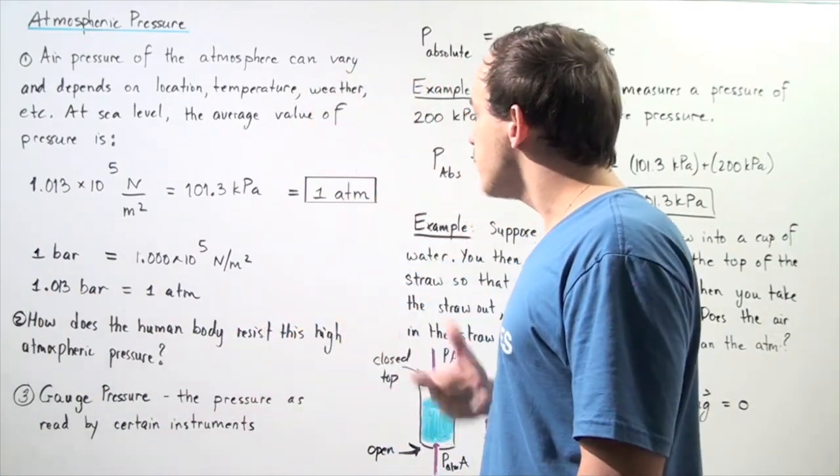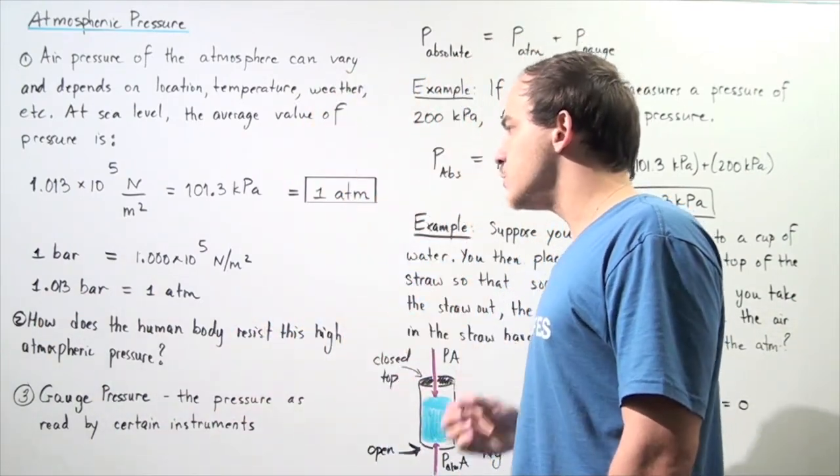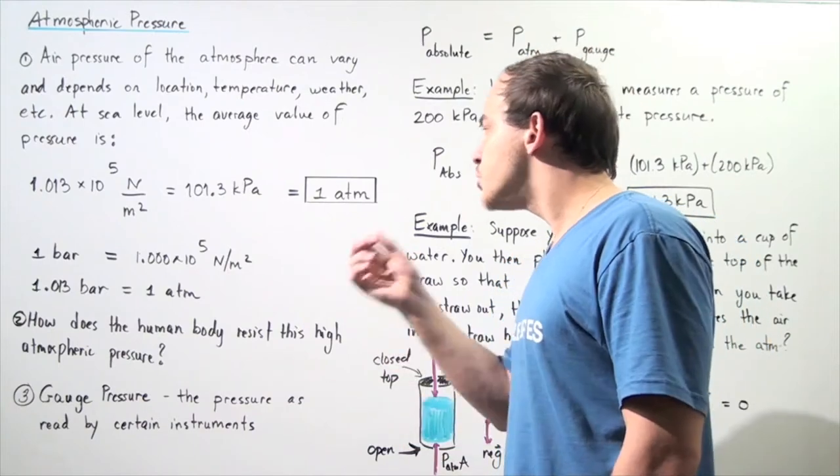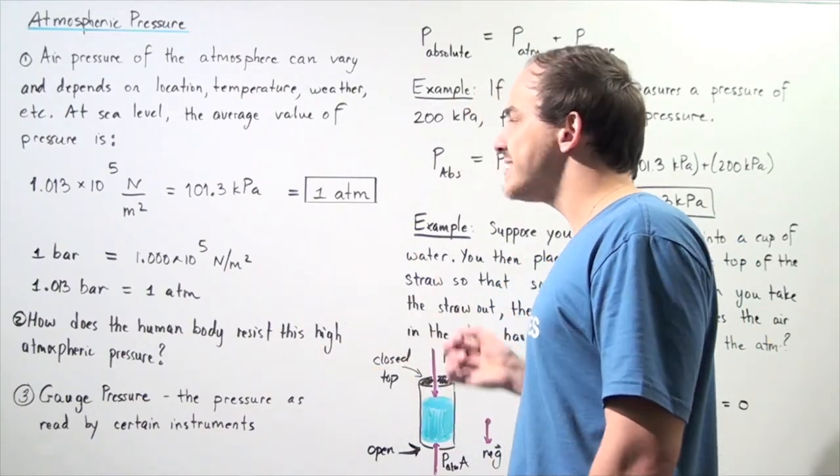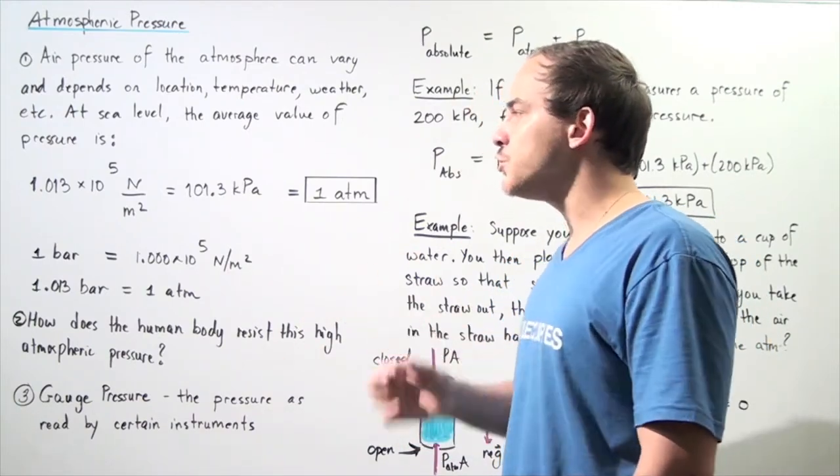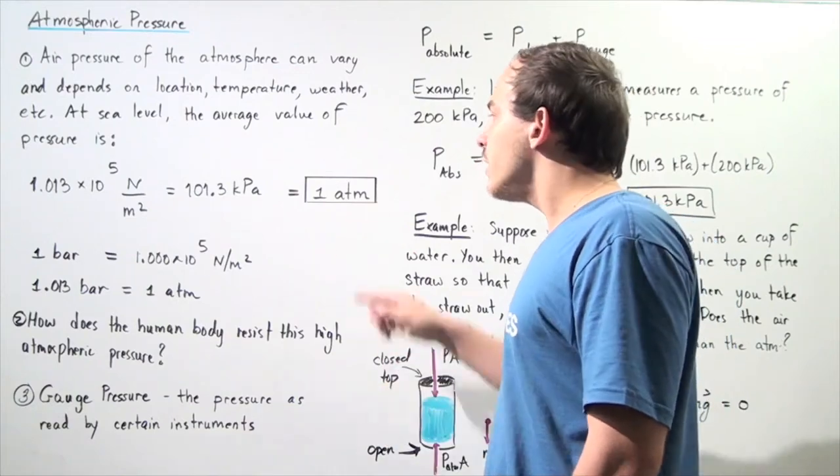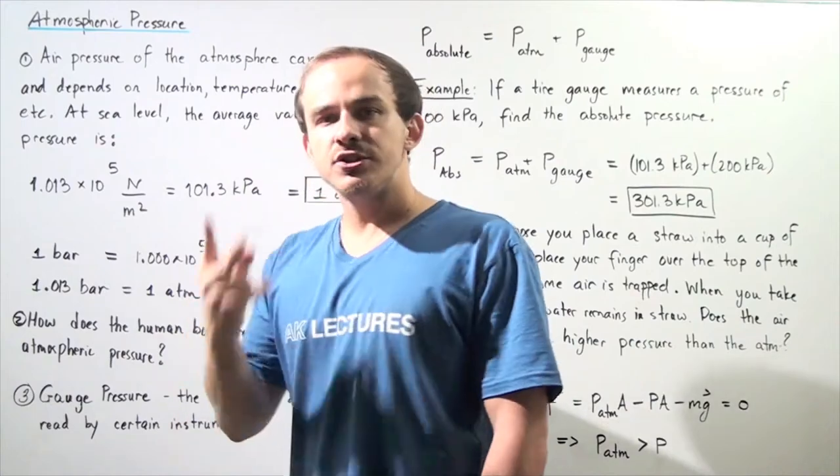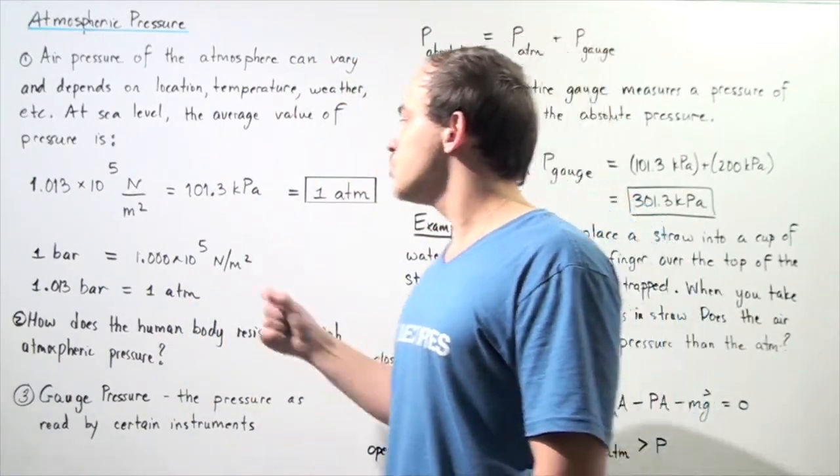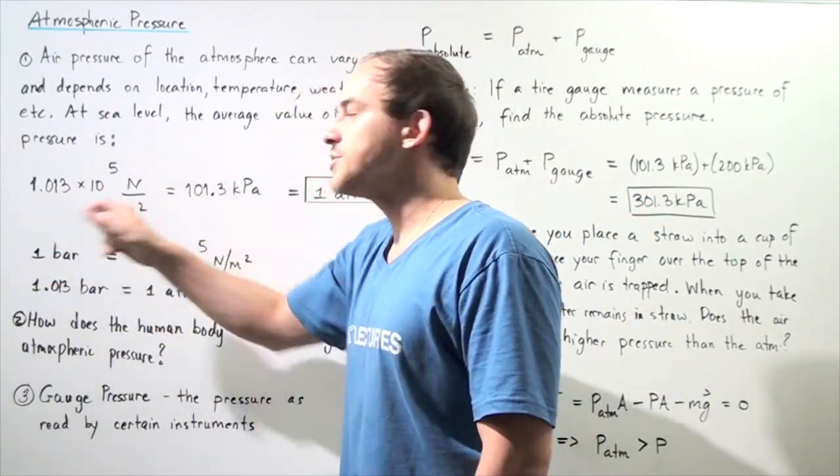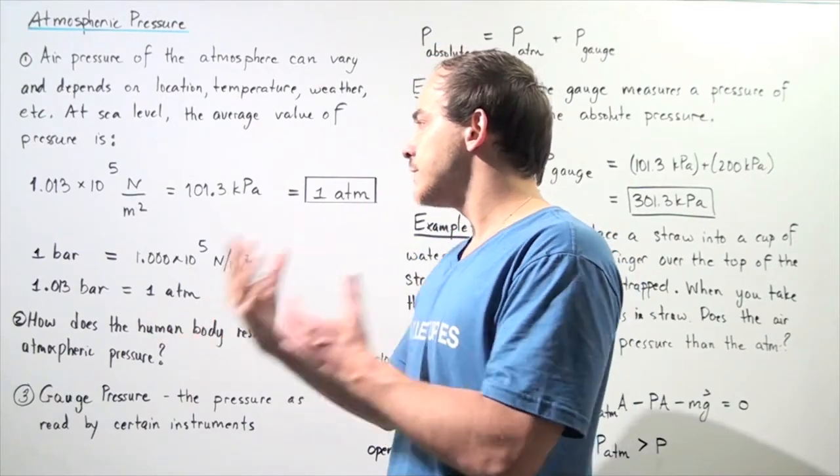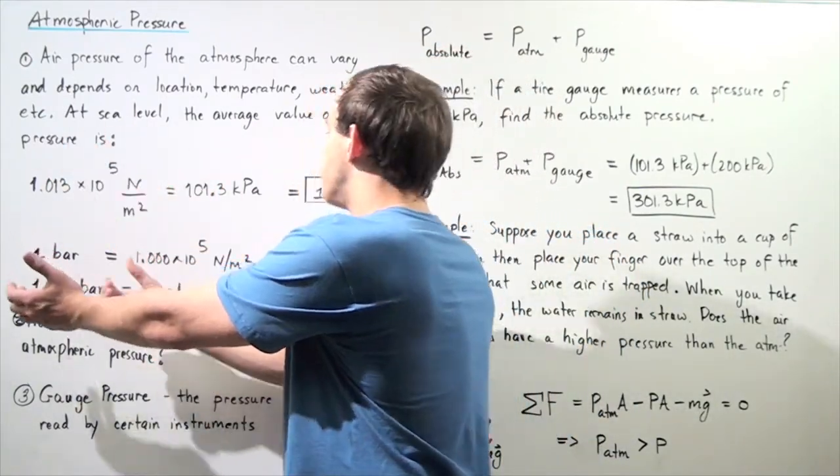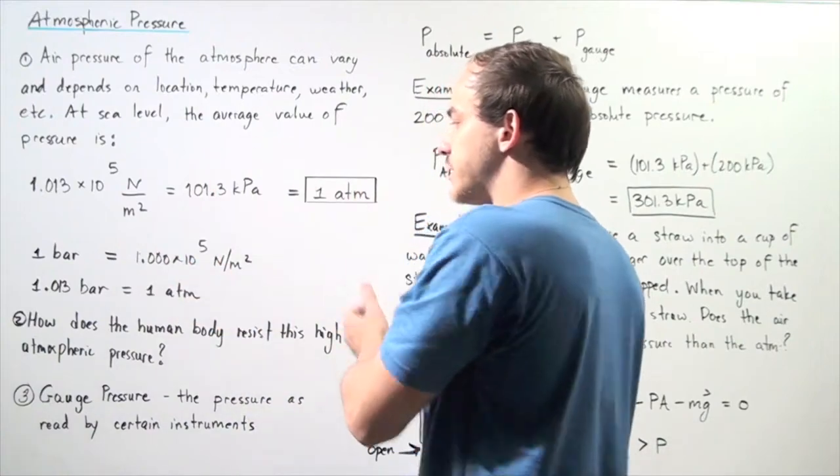For example, let's suppose somebody asks you to calculate what 2 atmospheric pressures equals in terms of newton per meter squared. Well, if 1 atm equals this quantity, then 2 atm must equal 2 times this quantity. And we can easily interconvert from this measurement to this unit to this unit.